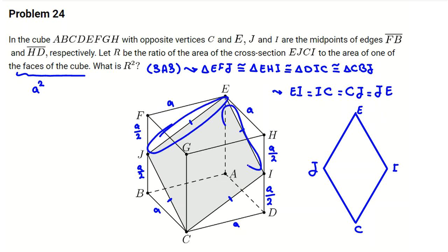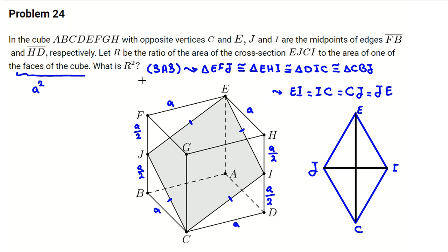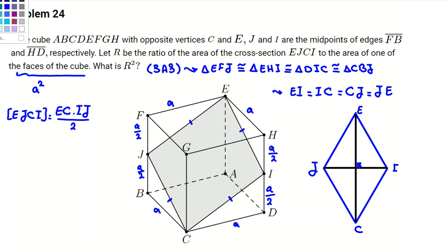Since the four triangles are congruent, all four sides of quadrilateral EJCI are equal, so it is a rhombus. In a rhombus, the diagonals are perpendicular, and the area equals the product of the diagonals divided by 2. So the area of EJCI equals EC times IJ over 2. Now our task is to find EC and IJ, and IJ is the easier one.